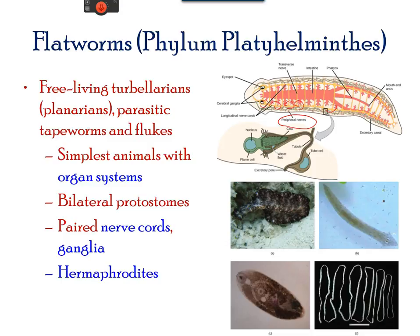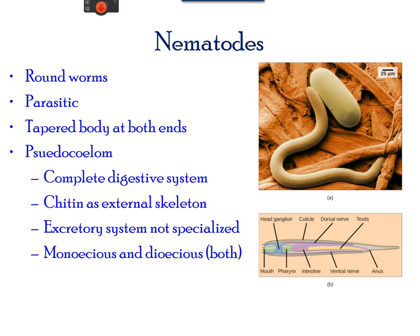Nematodes are also called roundworms. They are generally parasitic, with a tapered body at both ends and a complete digestive system. Chitin is also present on the external surface to give structural strength. They are usually present on the ocean floor and have a diverse life cycle — some can be monoecious (one sex) and others dioecious (having both sexes). They look like long tubes.